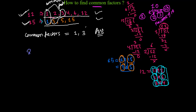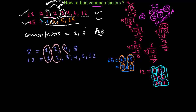Let me give another example: 8 and 12. The factors of 8 are 1, 2, 4, and 8. The factors of 12 are 1, 2, 3, 4, 6, and 12. Now selecting those numbers which appear in both lists: 1, 2, and 4. So the common factors of 8 and 12 are 1, 2, and 4.